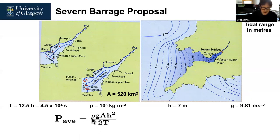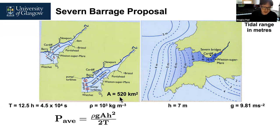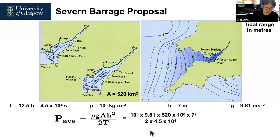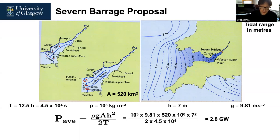Using the average power formula: density of water is 1000, gravitational acceleration is 9.81 m/s², the area is 520×10³ all squared, height is 7 metres so 7² = 49, divided by twice the period where the period is 12 and a half hours — that's 4.5×10⁴ seconds. Putting these all into the calculator gives 2.8 gigawatts. This is more than two nuclear reactors, almost three, in terms of power generation from this scheme.